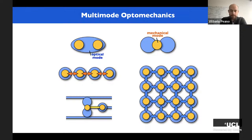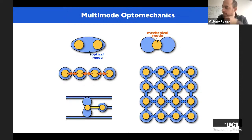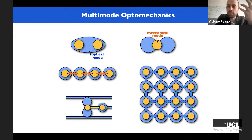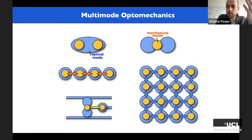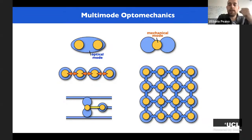We've discussed mostly single-mode optomechanics until now, with just a few examples like microwave to photon translation which had three modes. The key thing that makes optomechanics powerful and interesting is that we have a nonlinear interaction that in principle is very small at the single-photon level, but since it's nonlinear you can shine a laser on the system, have many photons, and this gives you a knob to tune the interaction.